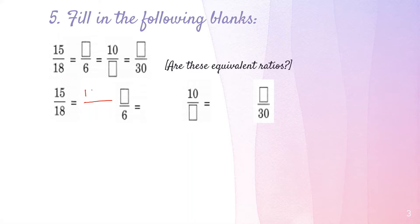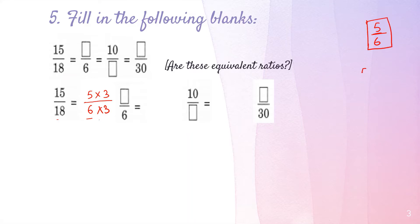Both 15 and 18 are divisible by 3. So instead of writing 15, I write it as 5 times 3, and instead of 18 I write 6 times 3. The 3 cancels, giving us the lowest form: 5 upon 6. To confirm this is lowest form, check that 5 and 6 are co-primes — they share no common factor.